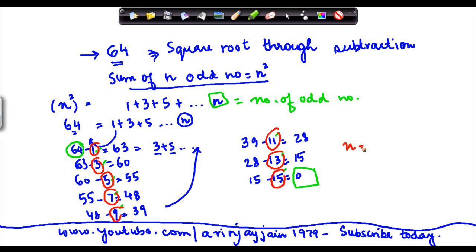So n is equal to 8, and is my answer correct? So n squared is equal to 8 into 8 is equal to 64, which means my value of n is correct.